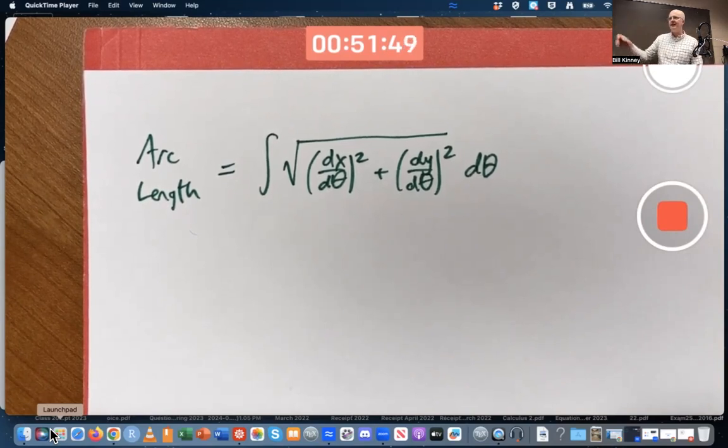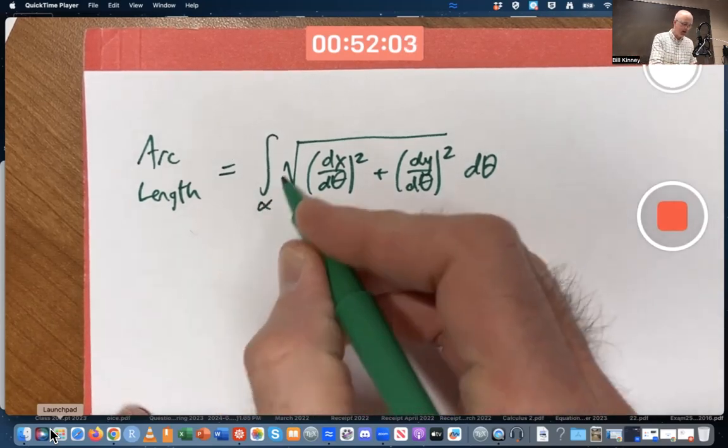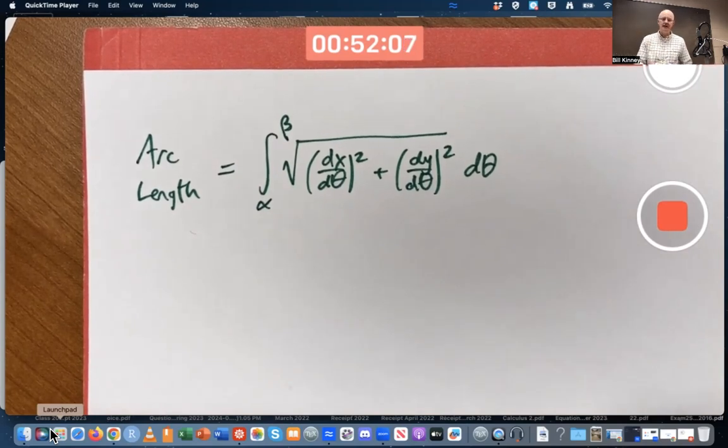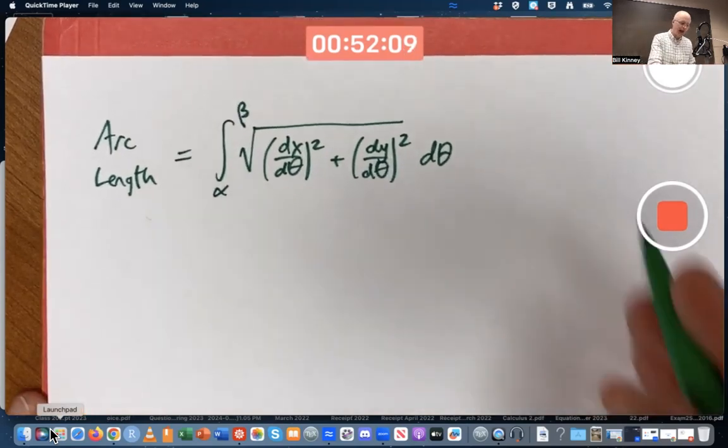If we wanted the entire length of the entire limacon, we'd have to let theta go from 0 to 2π. Theta is an angle, so maybe I should let it not vary between A and B, but between two Greek letters. How about the Greek versions of A and B, alpha and beta? Theta is varying between those two angles.